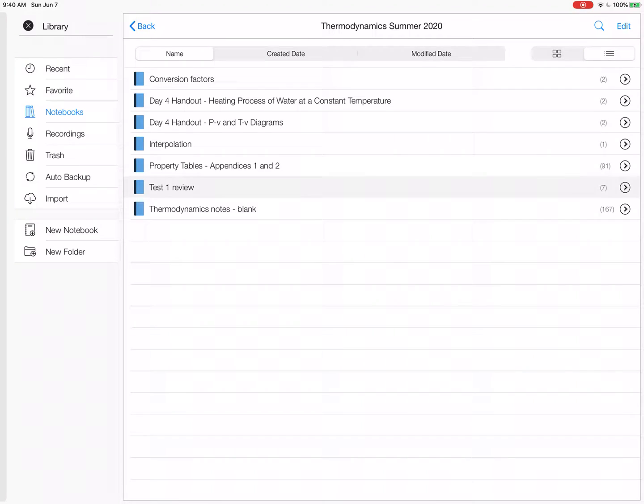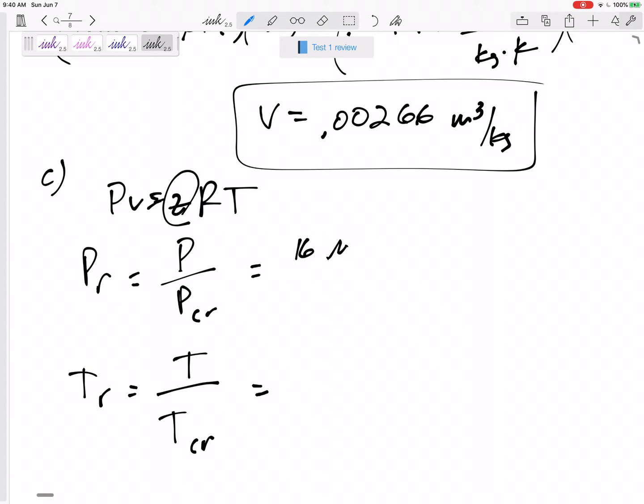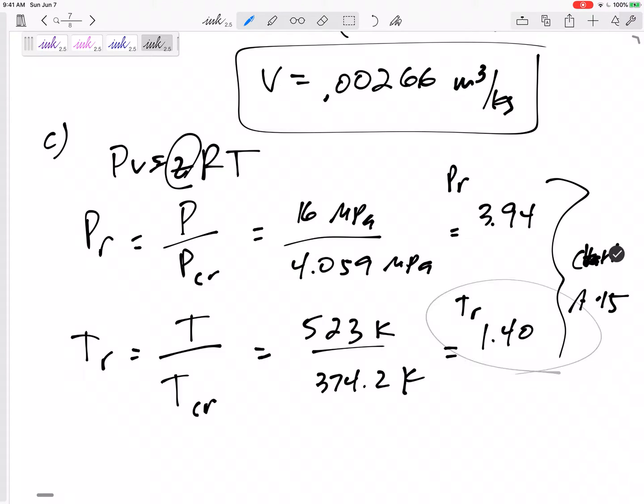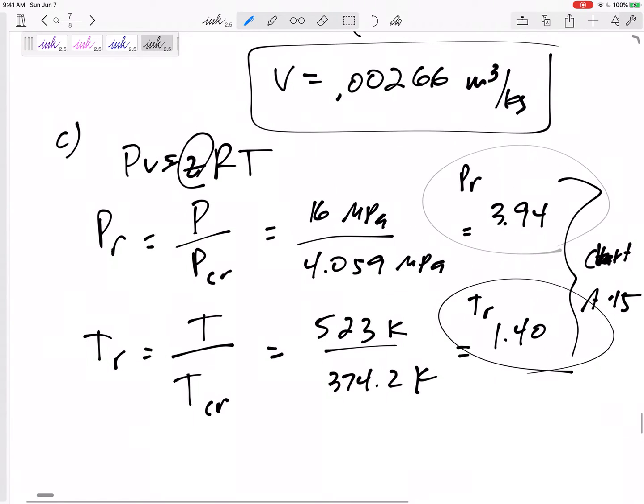So from right where we were, table A-1, here are the critical point values: the critical pressure 4.059 MPa, be careful that that one is actually in MPa, the temperature 374.2 Kelvin. All right, so let's take the current pressure of 16. Here I could keep MPa because I'm dividing by 4.059 MPa. Taking 16 divided by 4.059, we get 3.94 as my Pr, my reduced pressure. The temperature, 523 Kelvin divided by 374.2 Kelvin is 1.40.